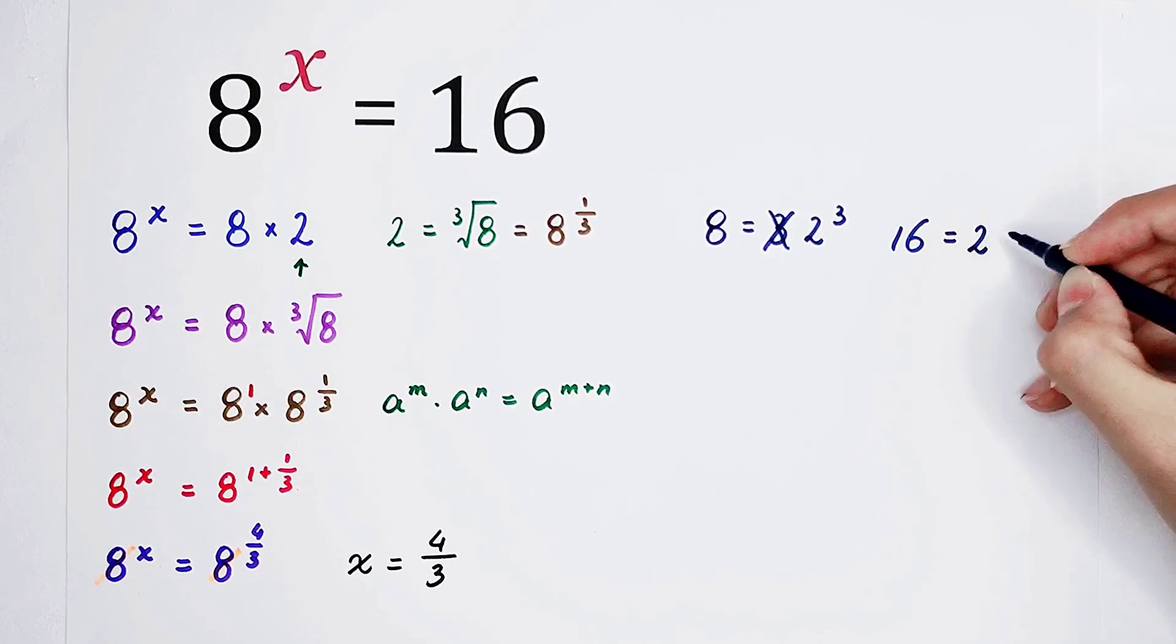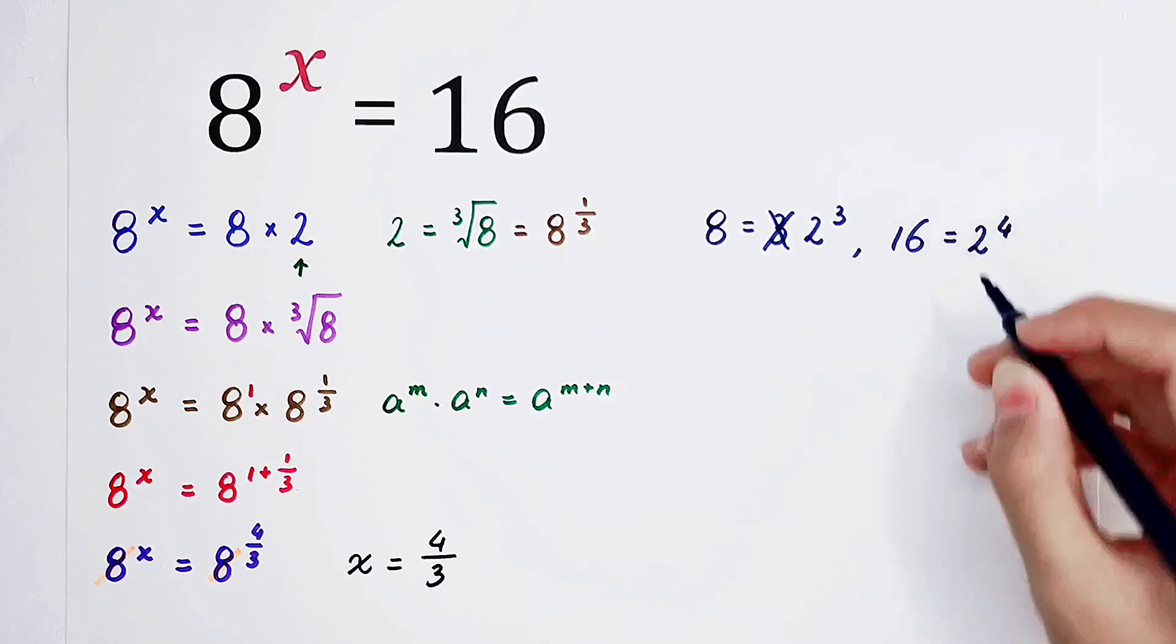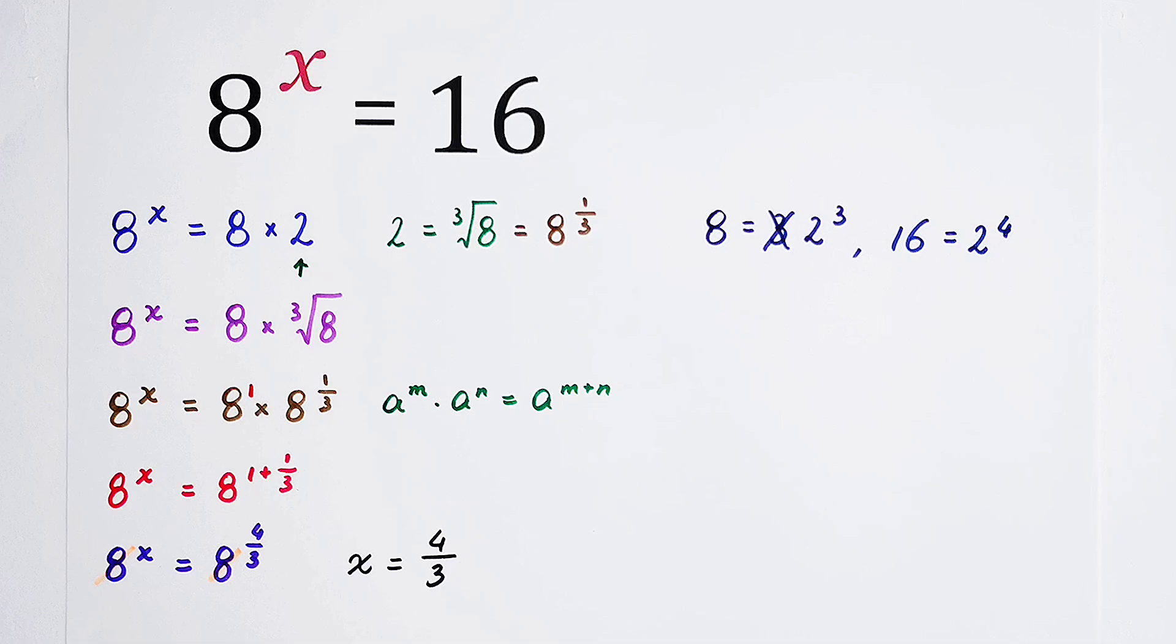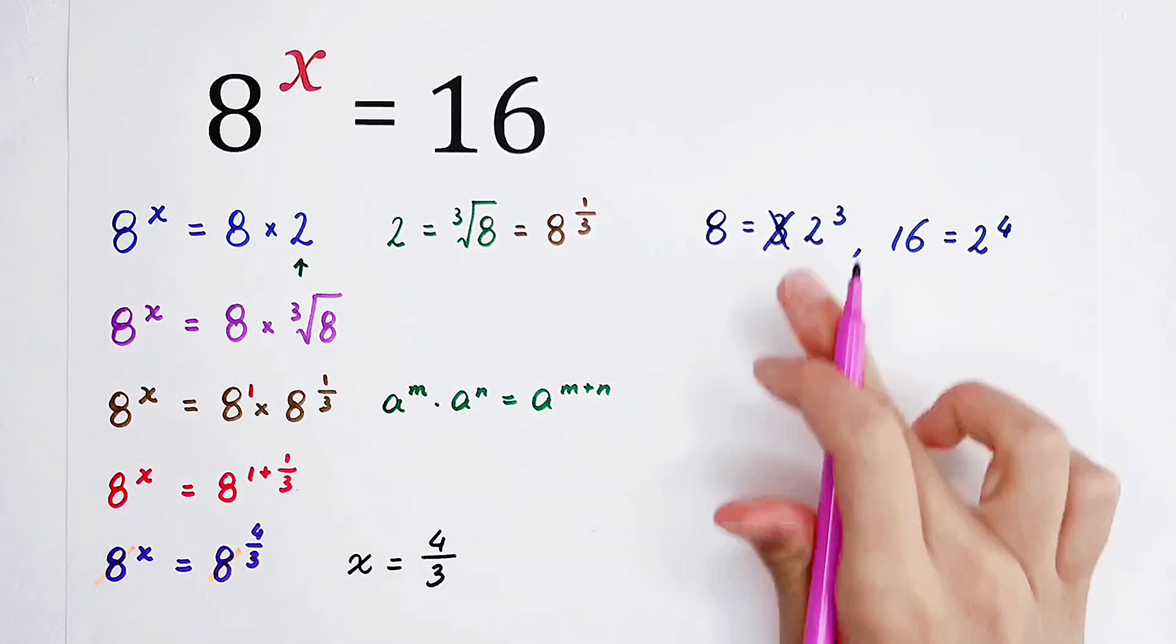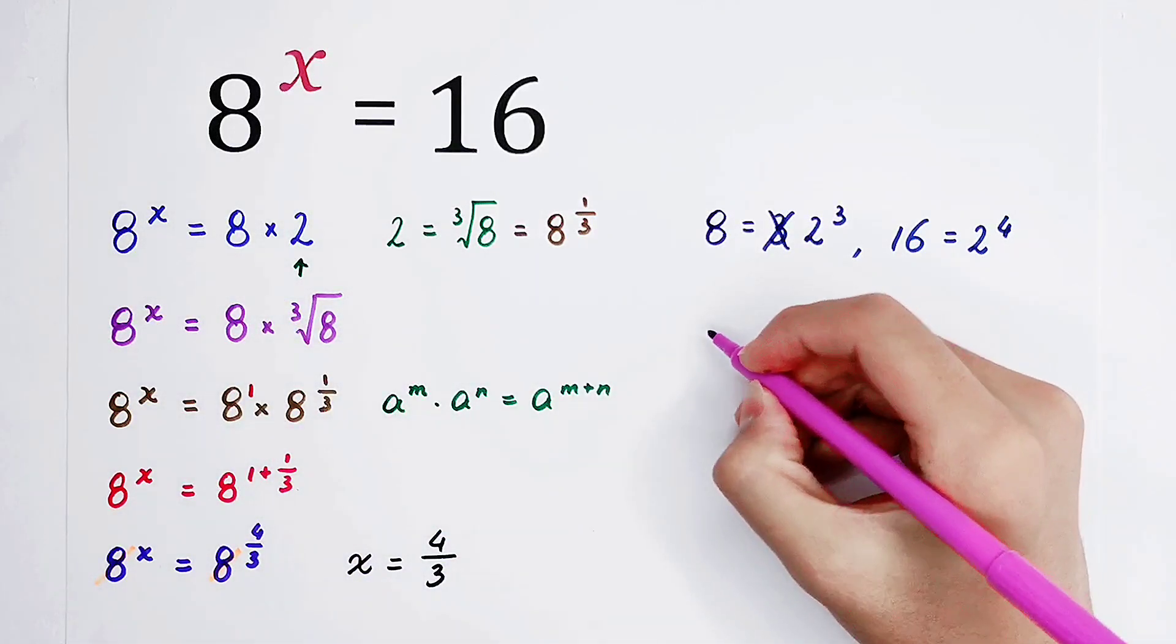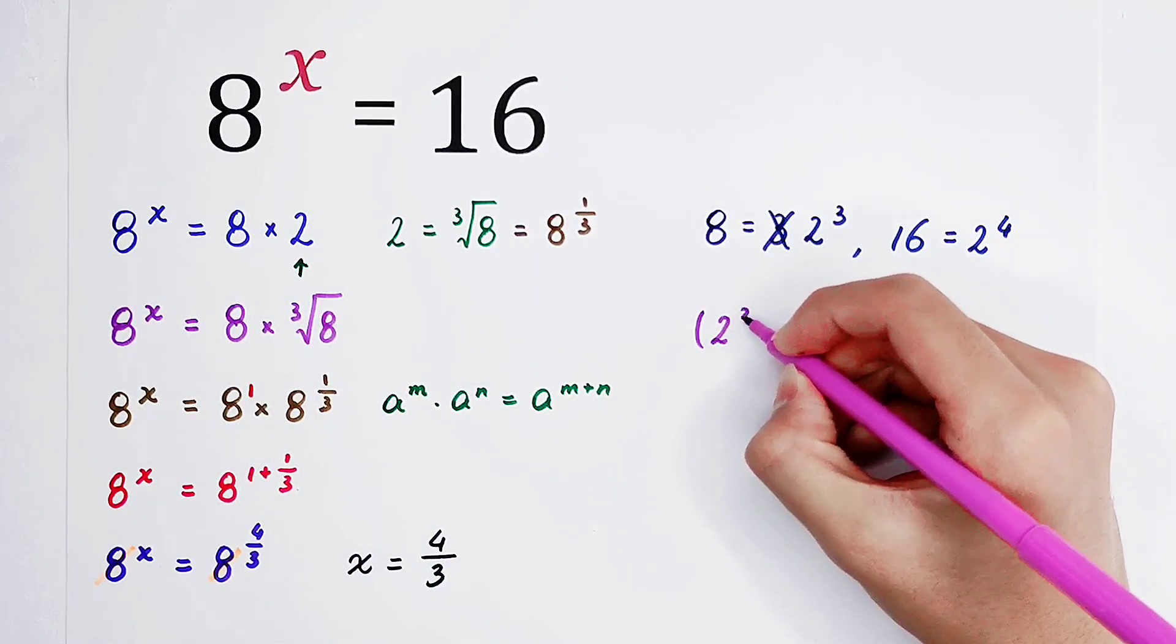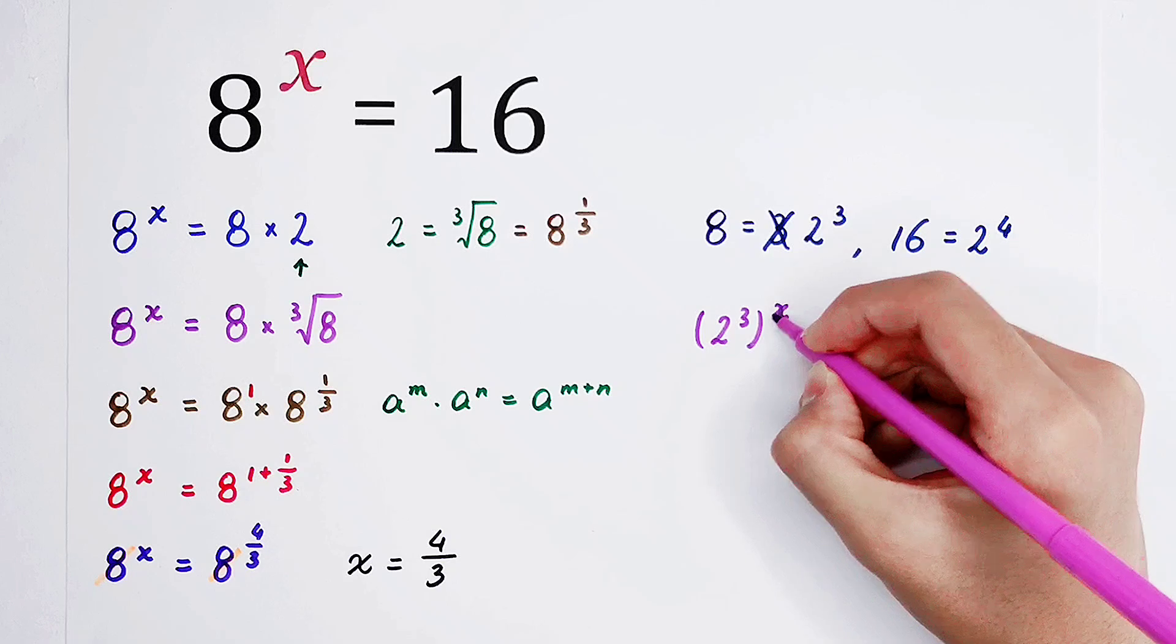16 is 2 to the power of 4. Very good. So now, we substitute 2 to the power of 3 for this 8. So it is 2 to the power of 3, all to the power of x, is equal to 2 to the power of 4.